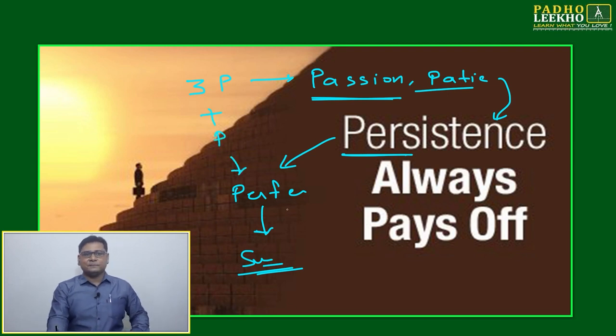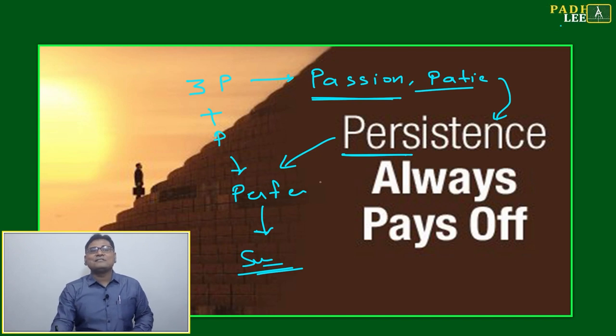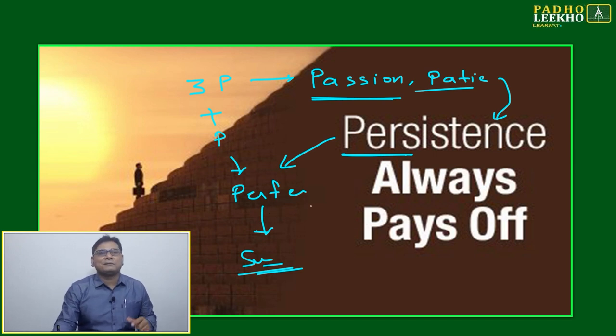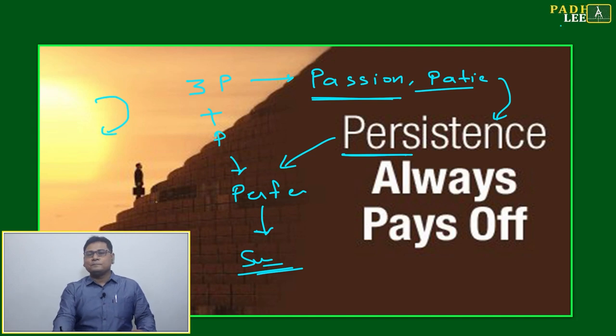You can add the fourth P - perfection. But this cycle you have to come: passion, patience, persistence, then perfection. Directly you can't come to perfection. People are chasing perfection but they don't know this cyclic nature of work. Once you will not start with first P, you will never reach fourth P of perfection. And without perfection, success will not come.